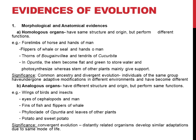Next, in opuntia — a type of cactus — the stem becomes flat and green to store water and also photosynthesize. Whereas the stem of other plants mainly gives support. So you can see that the stems of opuntia and other plants have the same origin, but in the case of opuntia it has become flat and green to store water and photosynthesize, while in other plants it is mainly giving support.